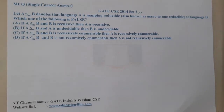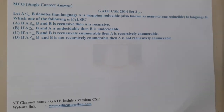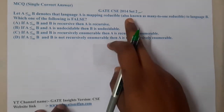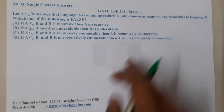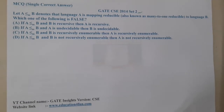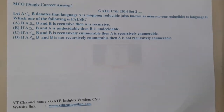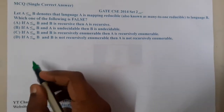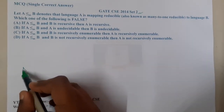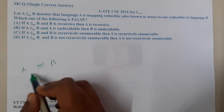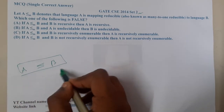The given question is: let A ≤m B, where ≤m denotes that language A is mapping reducible — also known as many-to-one reducible — to language B. They are indirectly saying that A can be reduced to B.